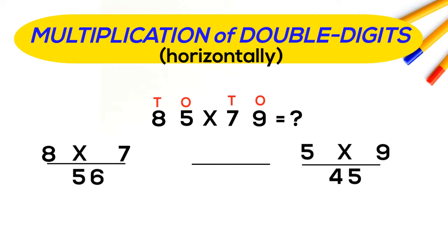Now for the middle part we have to multiply ones place numbers with 10 place number and add. So 5 into 7 is 35 and 8 into 9 is 72. We add 35 with 72 and write the answer 107 in the middle.